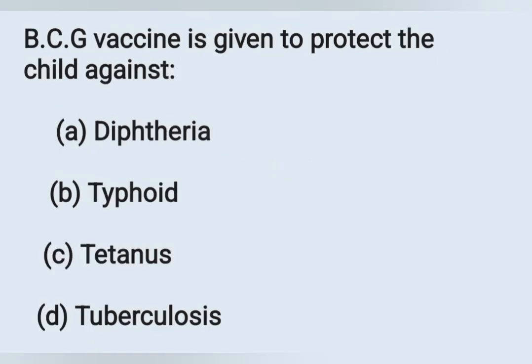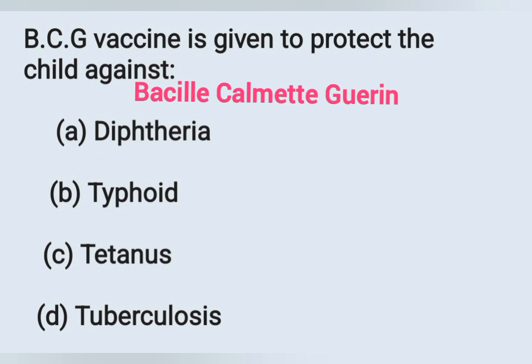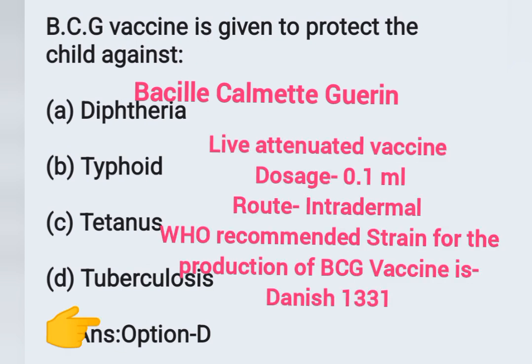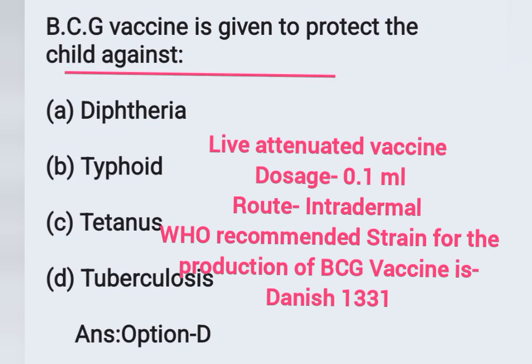Next question: BCG vaccine is given to protect children against — Option A: diphtheria, Option B: typhoid, Option C: tetanus, Option D: tuberculosis. BCG stands for Bacillus Calmette-Guérin vaccine and is given to protect against tuberculosis. The correct answer is Option D: tuberculosis. BCG vaccine is an example of a live attenuated vaccine; the dosage is 0.1 ml given by the intradermal route, usually with a tuberculin syringe.